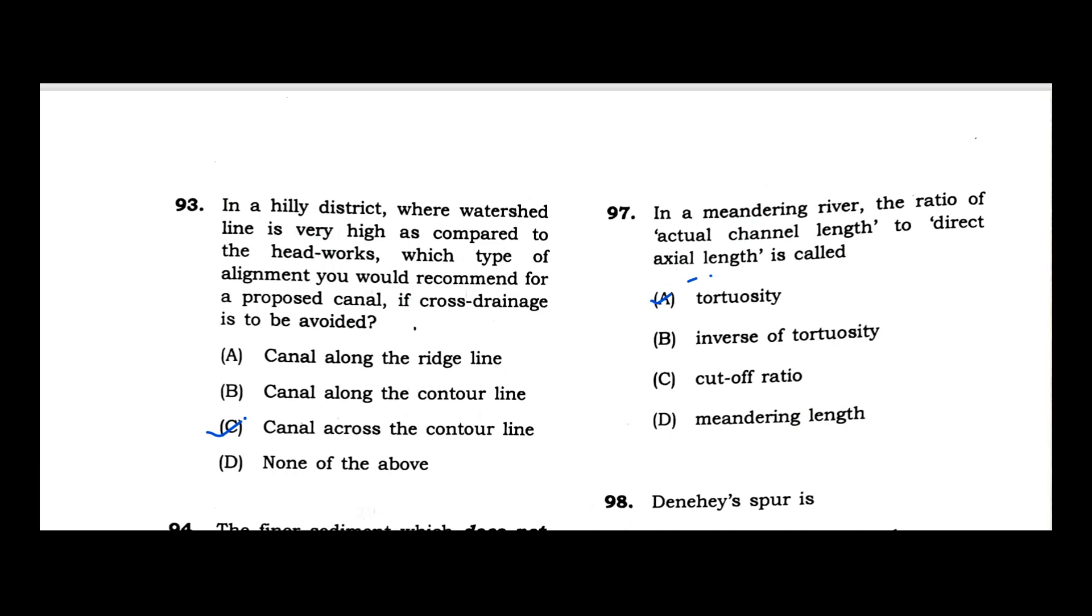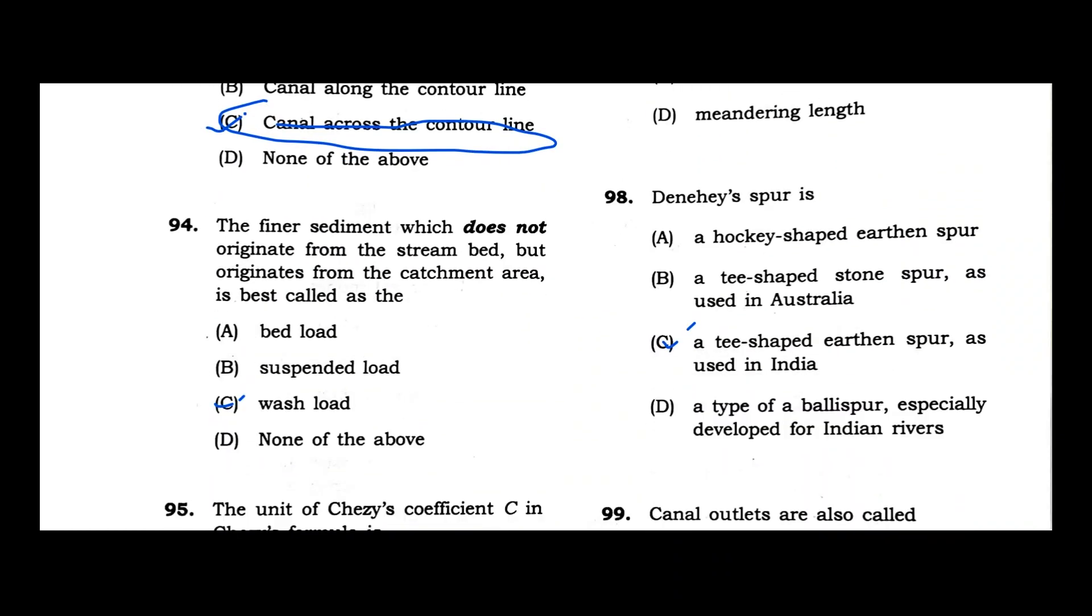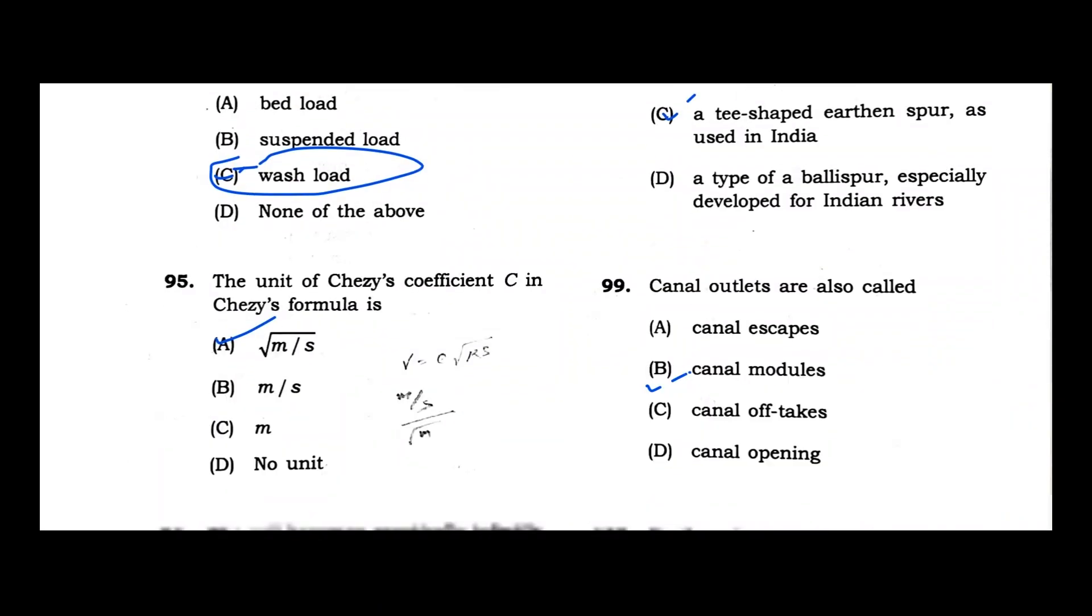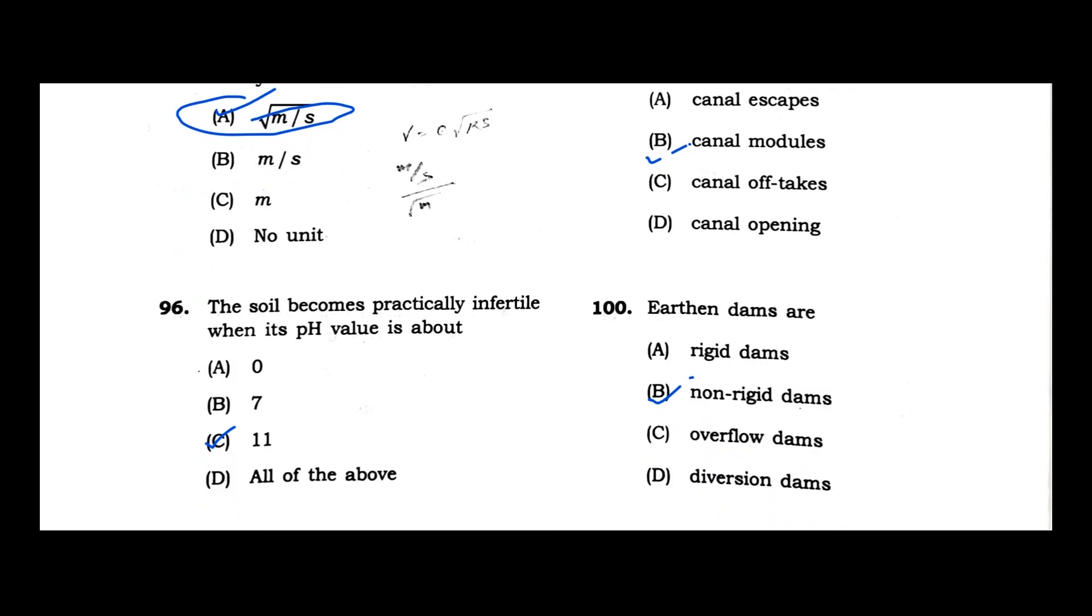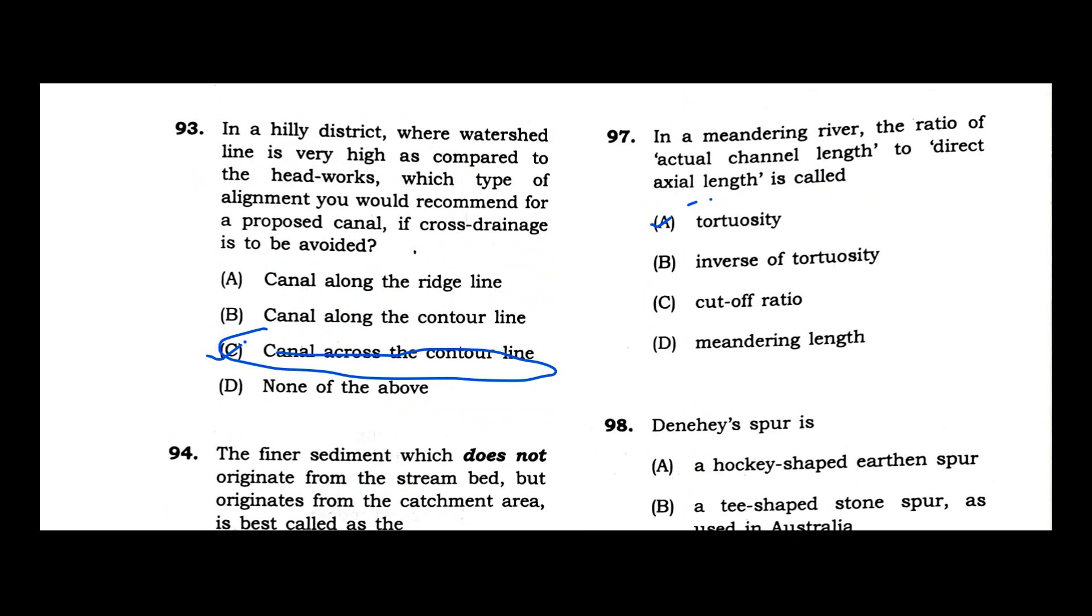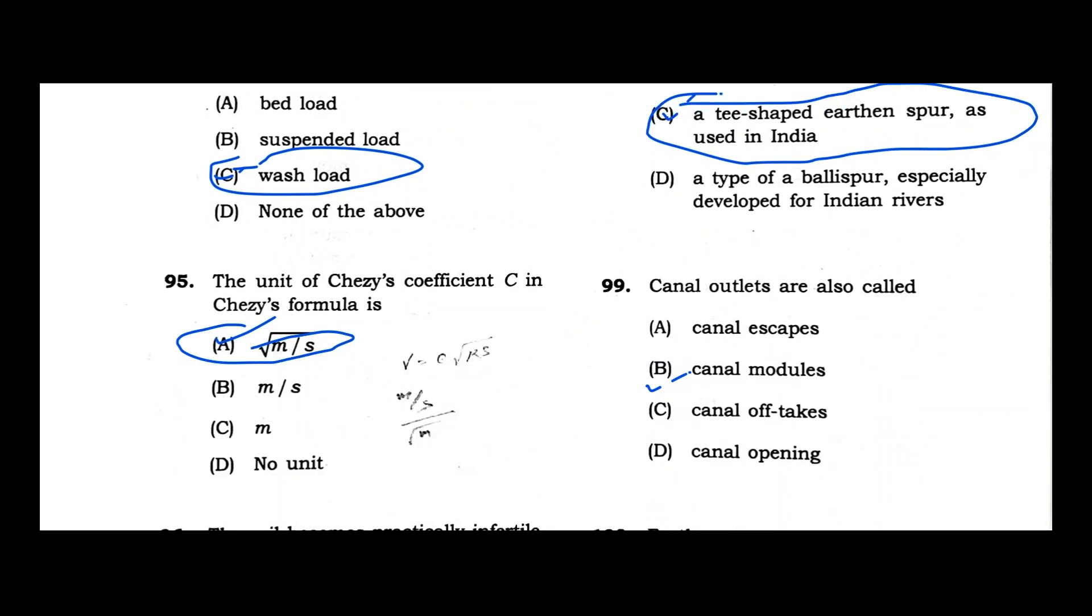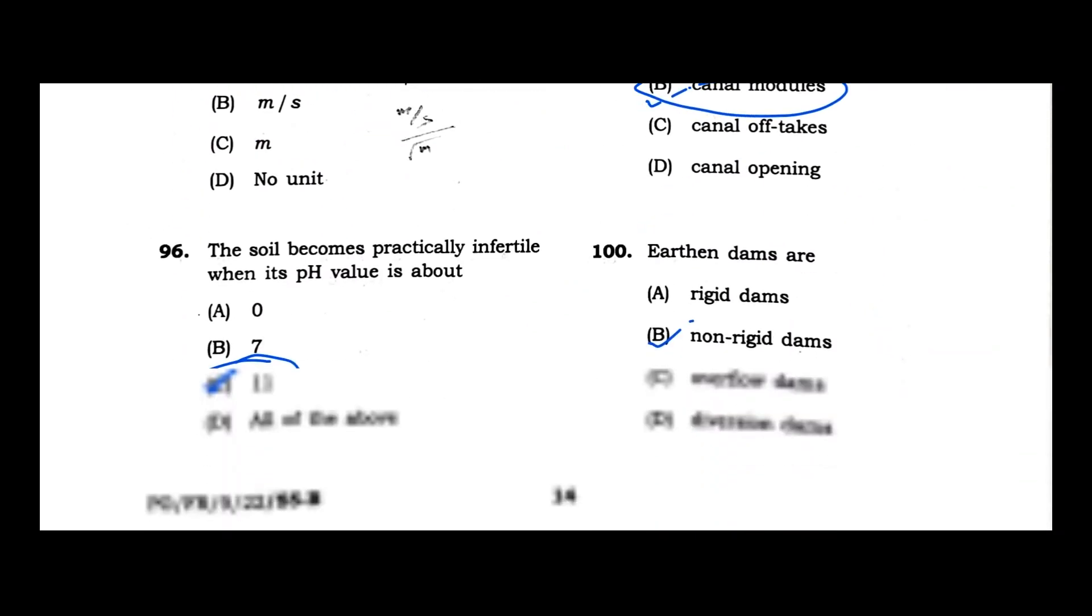Question 94: In a hilly district where water set line is very high compared to headworks, canal across the contour line alignment is recommended if cross drainage is to be avoided. Question 95: The finer sediment which does not originate from the stream bed but originates from the catchment area is called wash load. Option C is correct. Question 96: The unit of Chezy coefficient is √(m/s). Question 97: The soil becomes practically infertile when pH value is about 11. Question 98: In a meandering river, the ratio of actual channel length to direct axial length is tortuosity. Question 99: Denehey's spur is a hockey-shaped earthen spur as used in India. Canal outlets are also called modules.